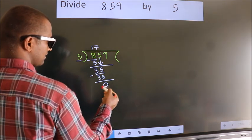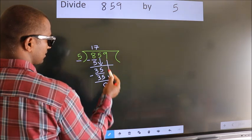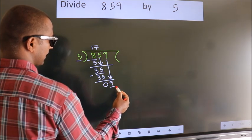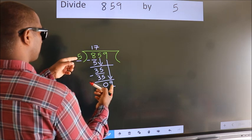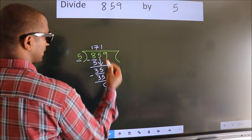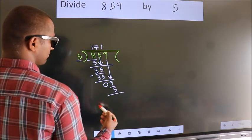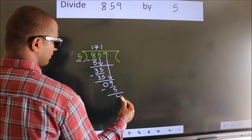After, the next number. So 9 down. So 9. A number close to 9 in 5 table is 5 times 1 is 5. Now we subtract. We get 4.